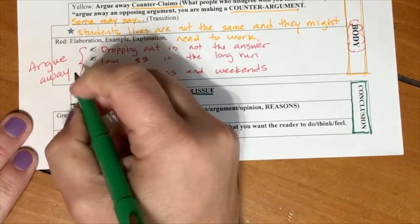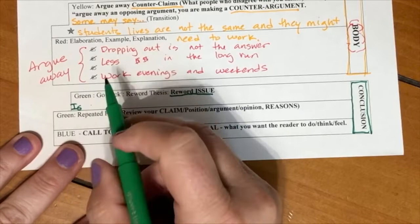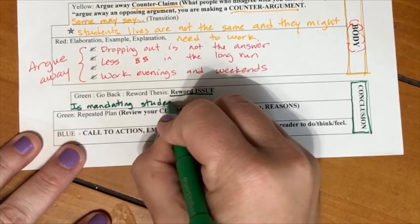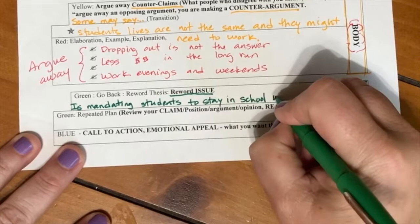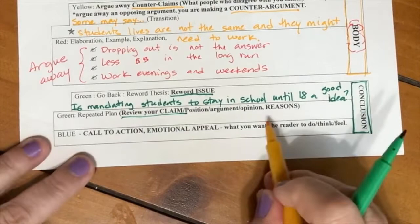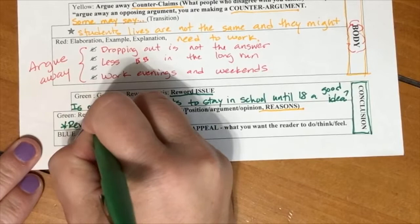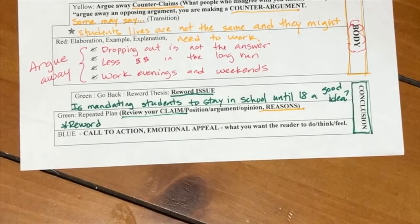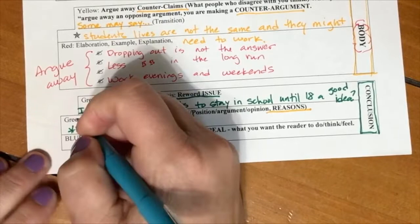Let's think about the conclusion. In our conclusion, it should mirror or should be similar to the introduction. The issue should be restated. Don't say the exact same thing. Say it in a little bit different way. For example, is mandating students to stay in school until age 18 a good idea? Then you're going to repeat your claim and your reasons. You're going to basically summarize your main arguments. In this essay would be, students should be required to stay in school until 18 because it's going to lead to better opportunities and it's going to make parents and teachers and students expect more of themselves.